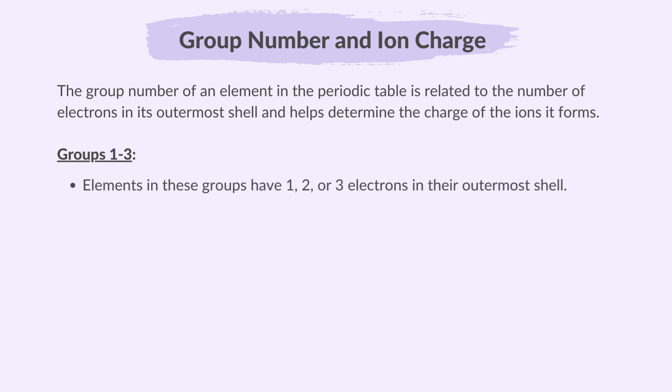Elements in groups 1 to 3 have 1, 2 or 3 electrons in their outermost shell. They tend to lose these electrons to achieve a full outer shell, forming positive ions or cations. Remember, in chapter 2, we learned that it is easier for elements to lose electrons than to gain them when they have fewer electrons in their outer shell.